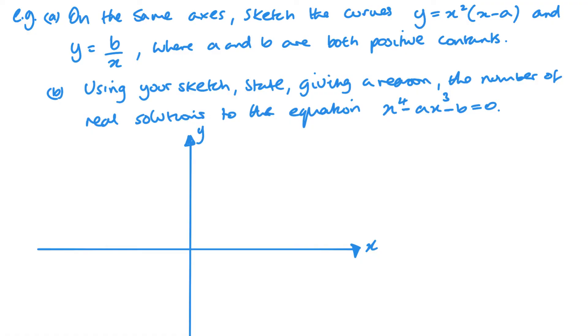Okay, so in this one, you can see in both of my graphs here, we've got an unknown value a in this first one, and a b in the second one. Now, both of these are positive constants. And that's quite important. It enables us to give a sketch of these diagrams.